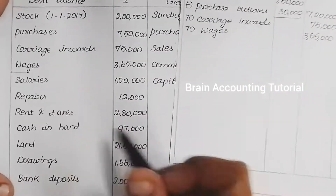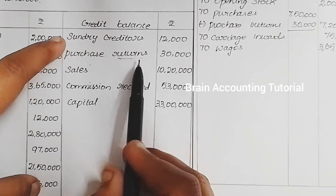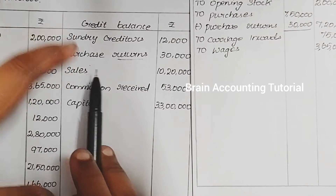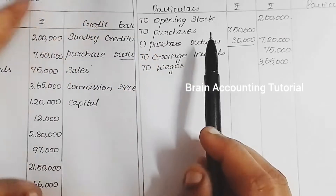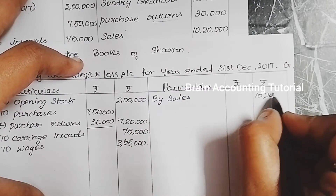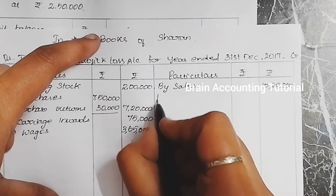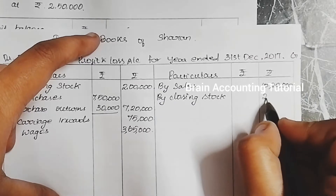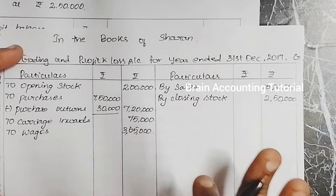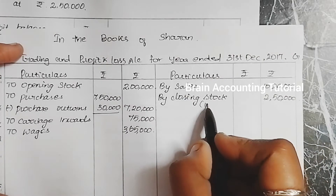Wages are 3,65,000. On the credit side, sales is 10,20,000 minus sales returns. Closing stock is also on the credit side — by closing stock, 2,50,000. So the total credit side is 10,20,000 plus 2,50,000 equals 12,70,000.